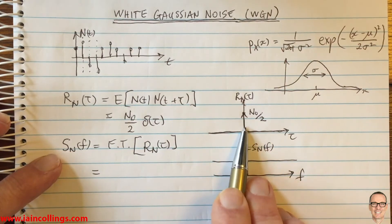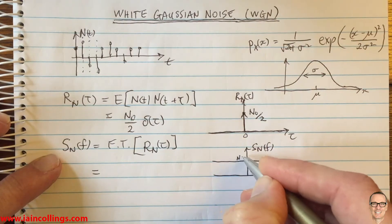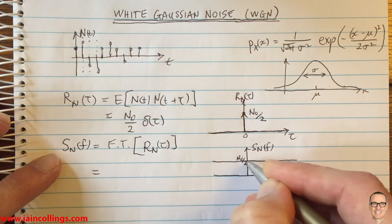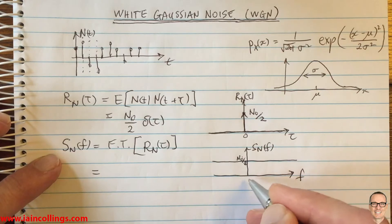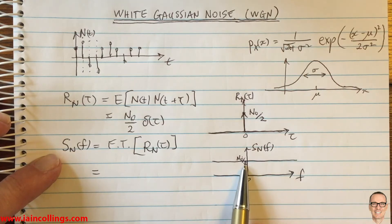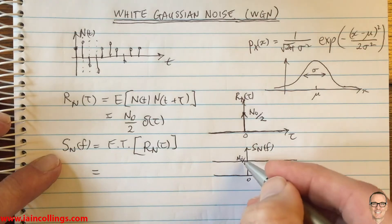Because this was a delta function, the Fourier transform of a delta function is a constant, and that height there is N naught divided by two. Now we see the divided by two here because we're plotting positive frequencies and negative frequencies. That's why we put it divided by two. So the area under here, if we do the area over both sides, that cancels out the divided by two.